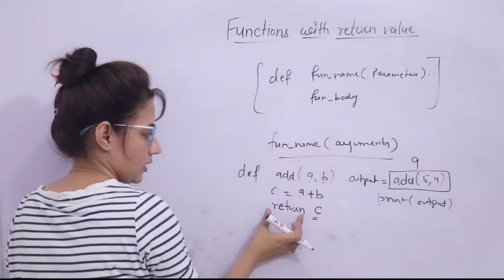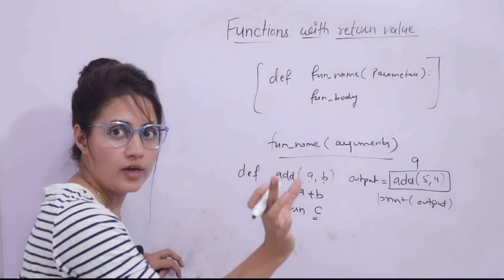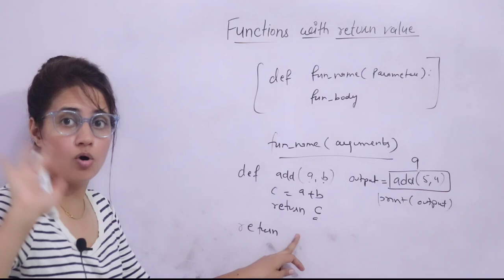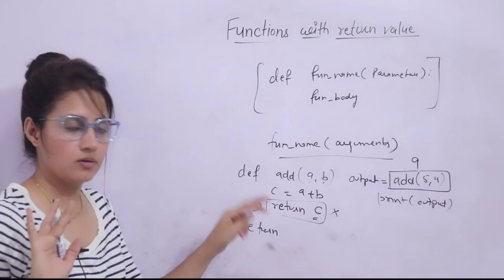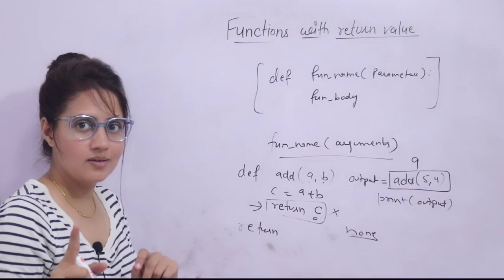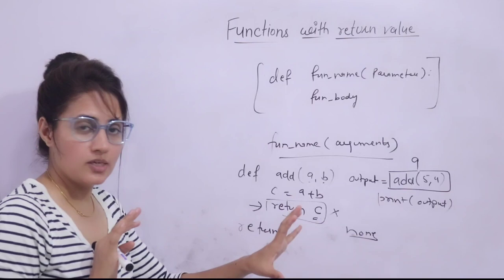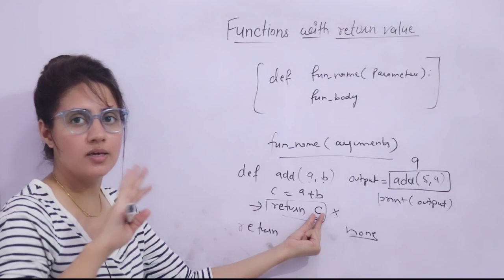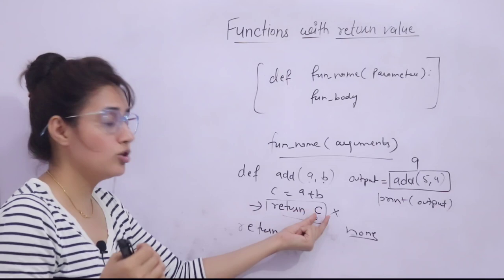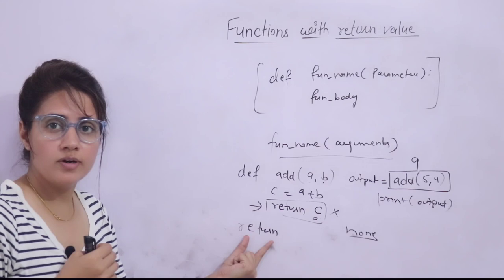The syntax is: `return` keyword followed by a return value — whatever value you want to return. But the return value is optional. You can simply write `return` with no return value, or you can omit the return statement entirely. In both cases, the function will return `None`. The return value can be any object — in Python, everything is an object — so it can be a numeric value, int, float, complex, or any sequence or collection like list, tuple, set, dictionary, or any user-defined functions, modules, packages, anything.